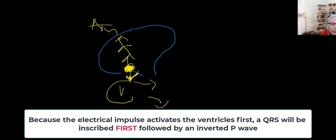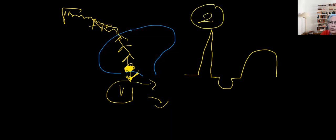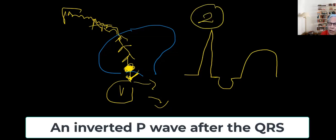If it activated the ventricles first, you will have a QRS, but this one is also going up there. So it eventually will have a P wave that is inverted after the QRS complex. So there are two characteristics so far. If we see a P wave that is inverted after the QRS complex, that also is evidence that this beat is coming from the AV node.